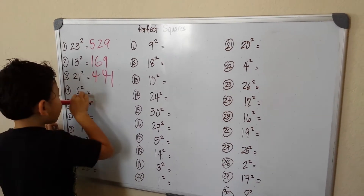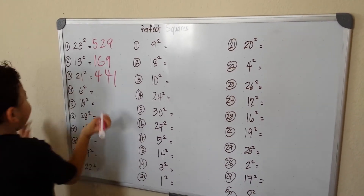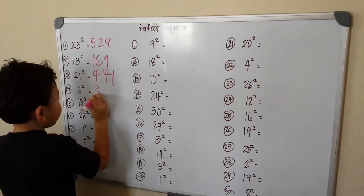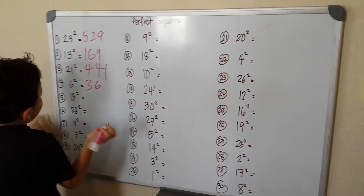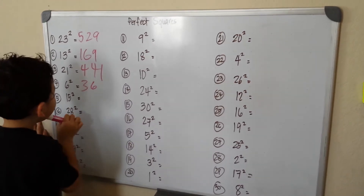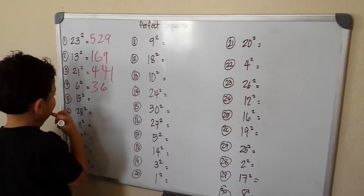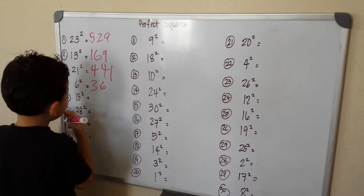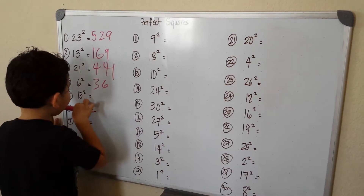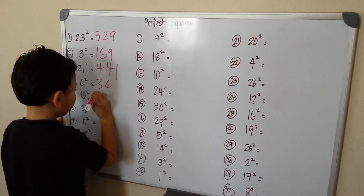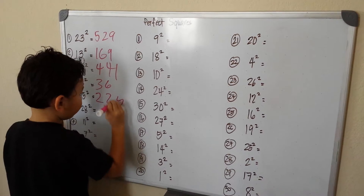Okay, 62 — no, 6 squared is 36. 15 squared — okay, let me think. I think it's 225.